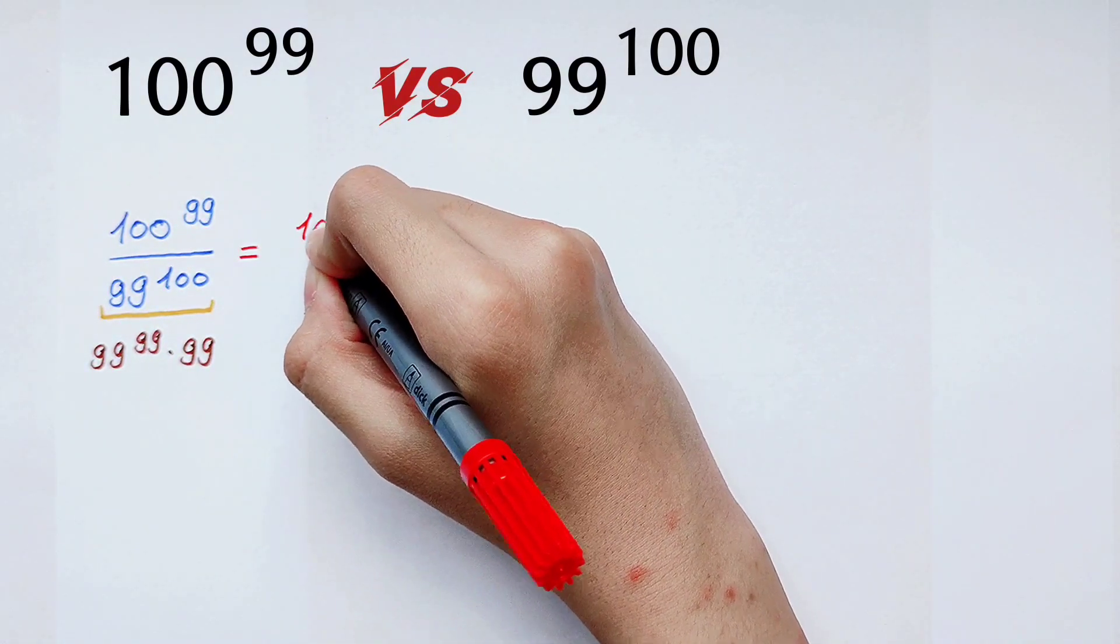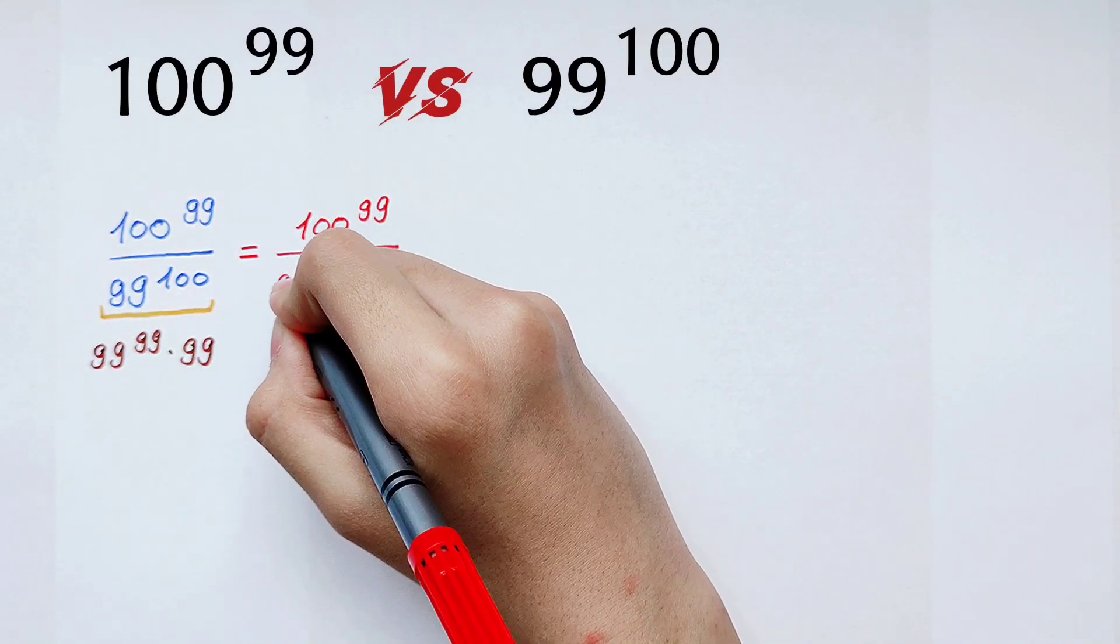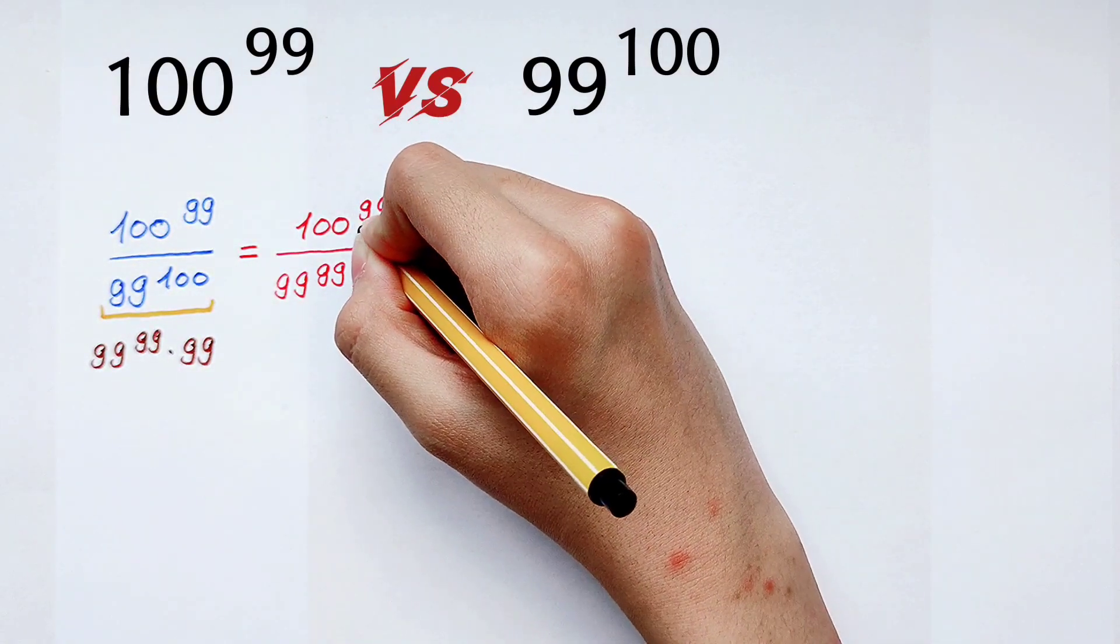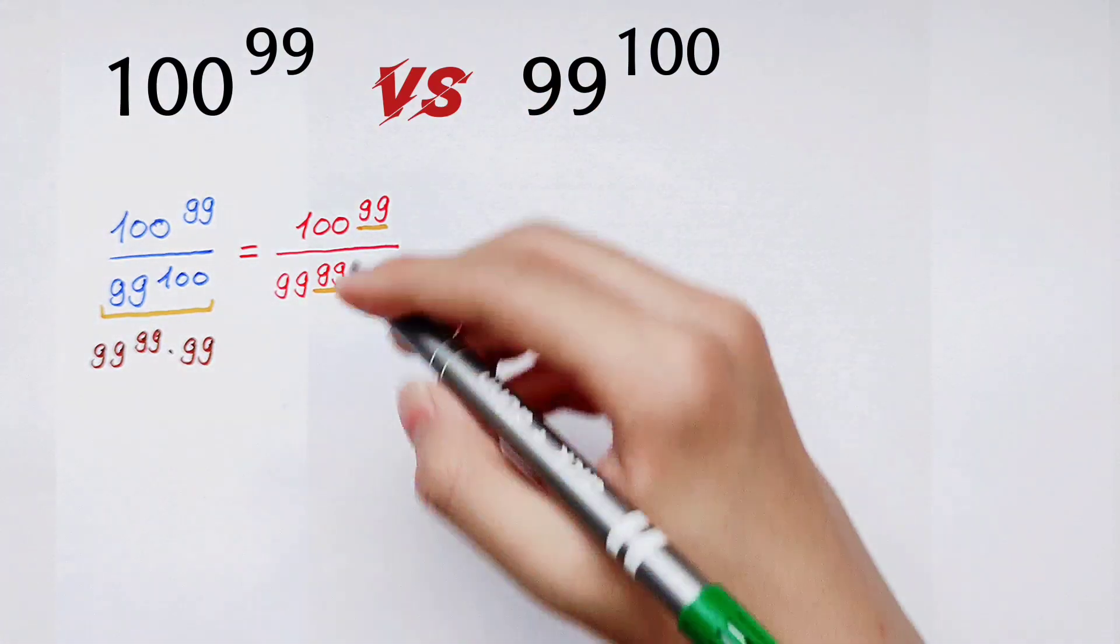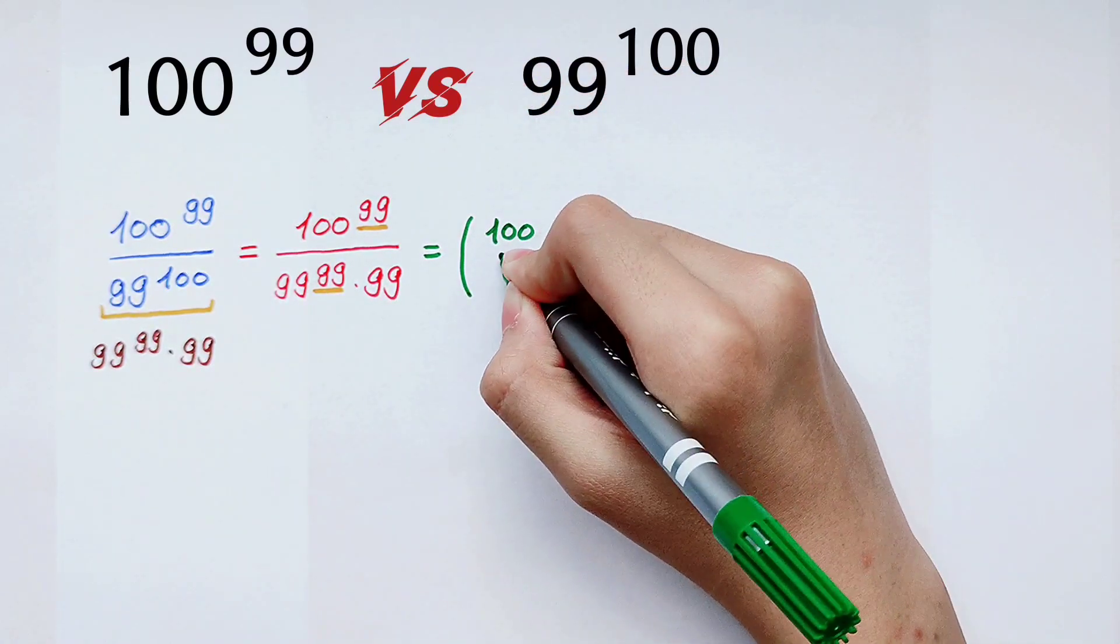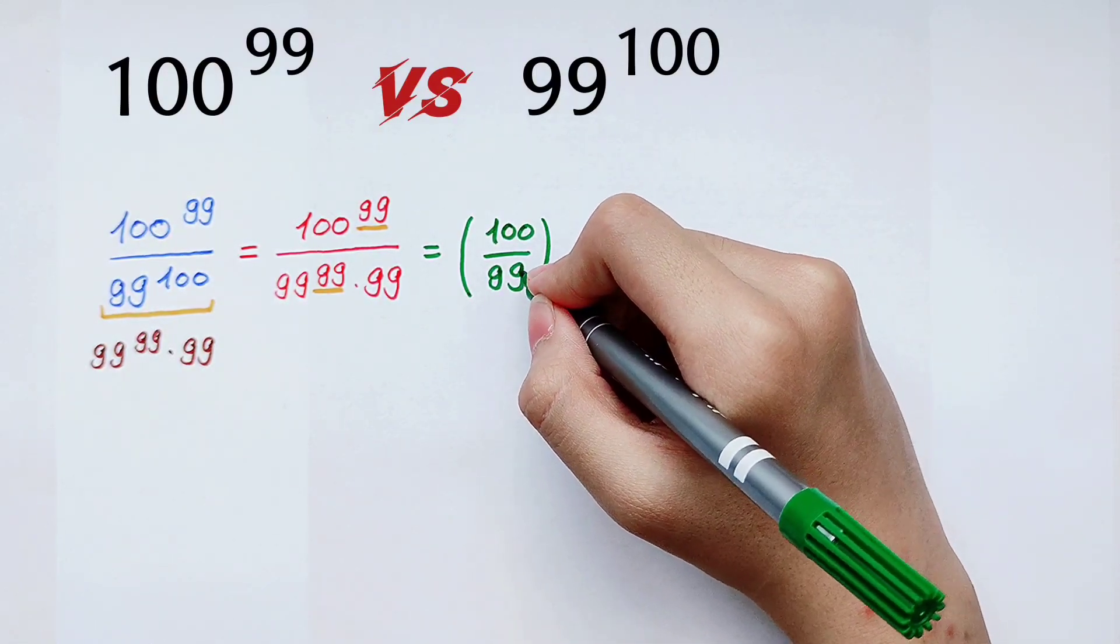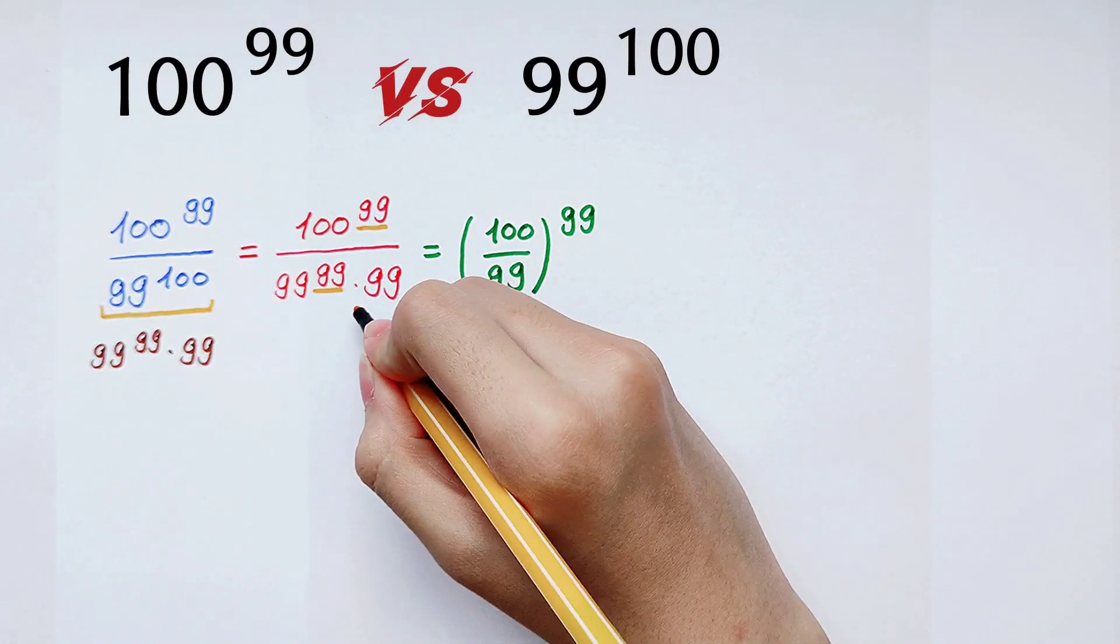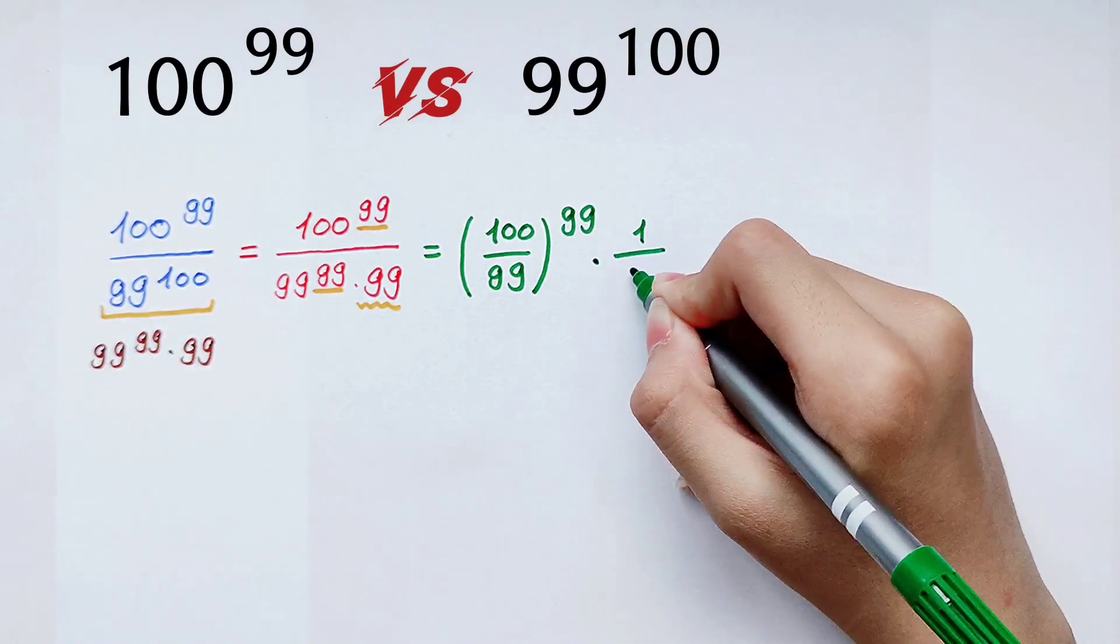So here is 100^99 divided by 99^99 times 99. Because the exponents are both 99, this is (100/99)^99, and here is a bracket, don't forget it, and all to the power 99. And here it is 1/99, so you have to times 1/99.